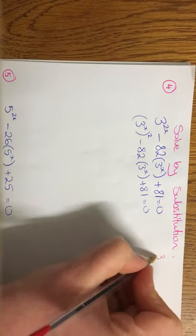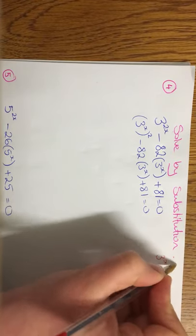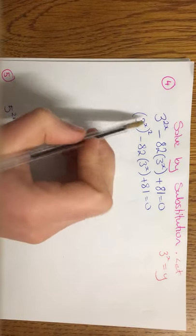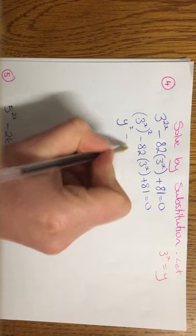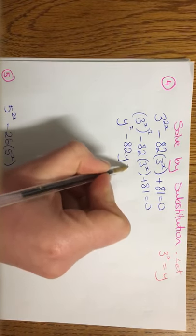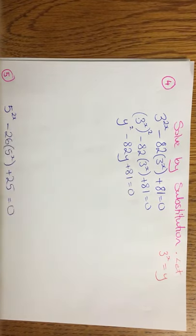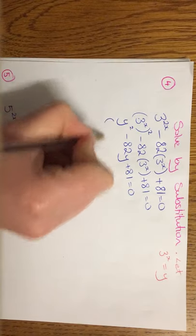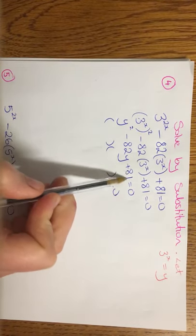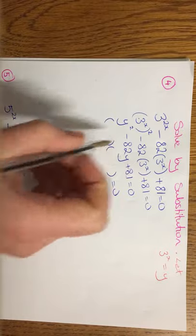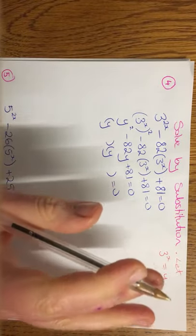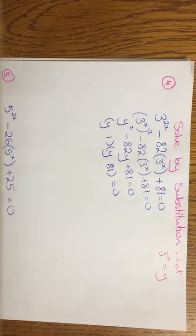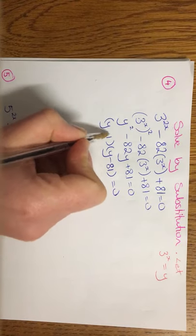So instead of 3x, I'm going to let that equal to y. So let 3 to the x equal to y. So everywhere you see a 3 to the x, you put in your y squared minus 82y plus 81. And that looks way better. We're used to those. Y squared, y and a number or x squared, x and a number. Straight to brackets. So two numbers are multiplied to give me 81 and add up to minus 82. So if you're fine, you can use your minus b formula here if you like. There's really no need for these simple ones. You have your 81 and your 1 and a minus and a minus.